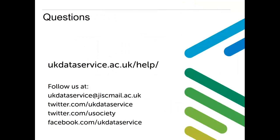We've also provided support for using the Understanding Society data and can certainly help with issues around data quality or things in the data that are not clear. If you want to contact support at the UK Data Service you can do so through ukdataservice.ac.uk/help, where you'll find a list of forms to fill out depending on the nature of the support required. Fill in the correct form and it goes to the correct team, who are best placed to get back to you. We aim to respond within three working days.